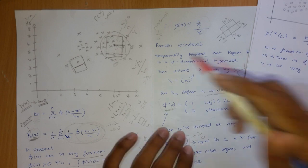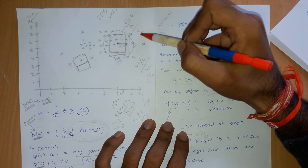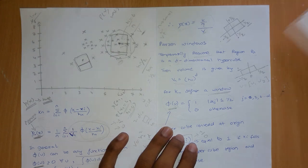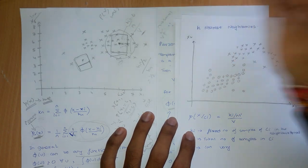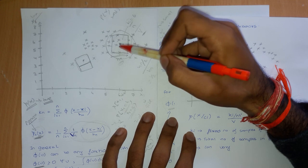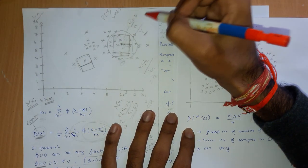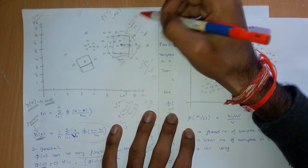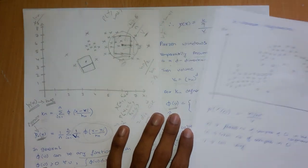Instead of defining h, or fixing the volume — since volume is determined by h — what if we fix k instead? Here k is the number of samples near the point in a given region. So what if we say we will choose a window for which there are only, say, three or six neighbors in the region? Let us see how we can formulate that problem.